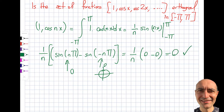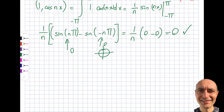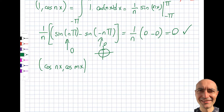So far this shows orthogonality for case one, but it is not good enough to say the whole set of functions is orthogonal. I can only say that if one function is 1 and the other is cosine of nx, I get orthogonality on this interval. That's very important. Now I will attempt to solve the other case: cosine of nx versus cosine of mx, where m and n are arbitrary and not the same.